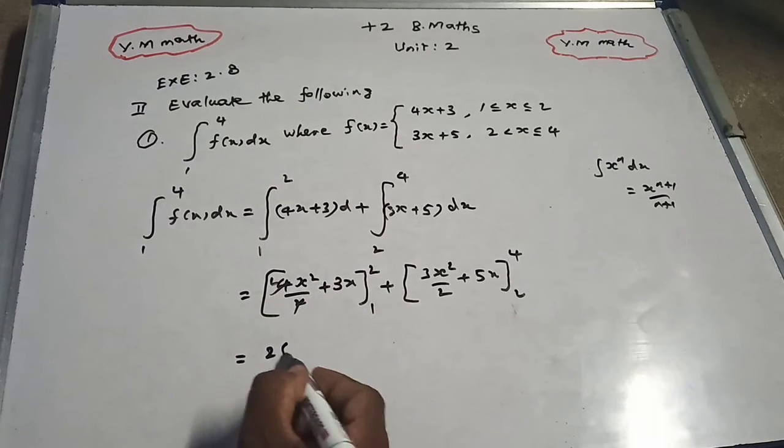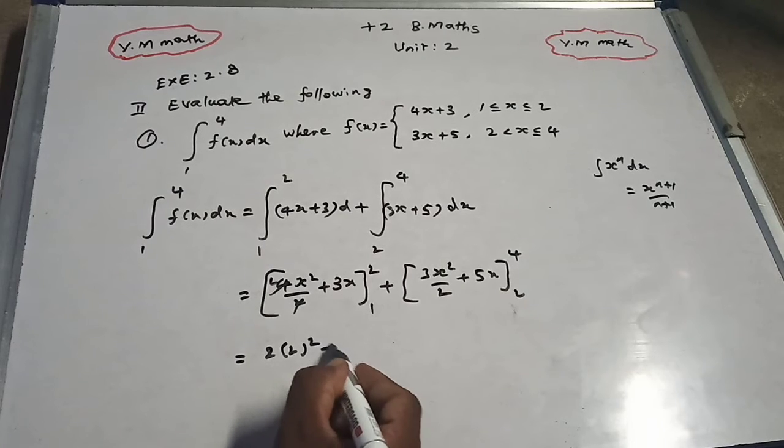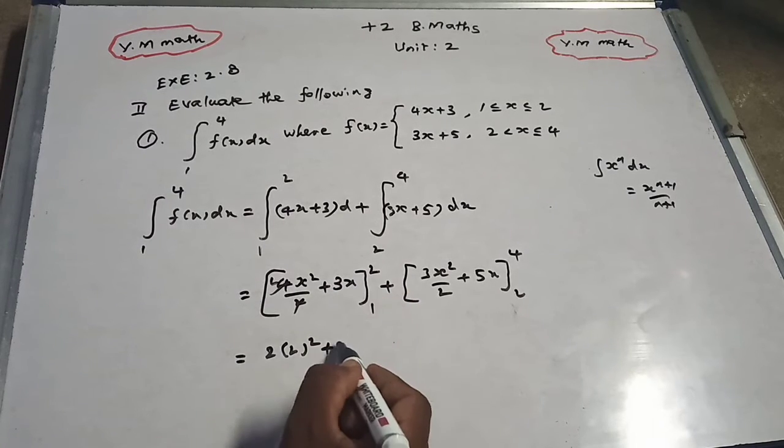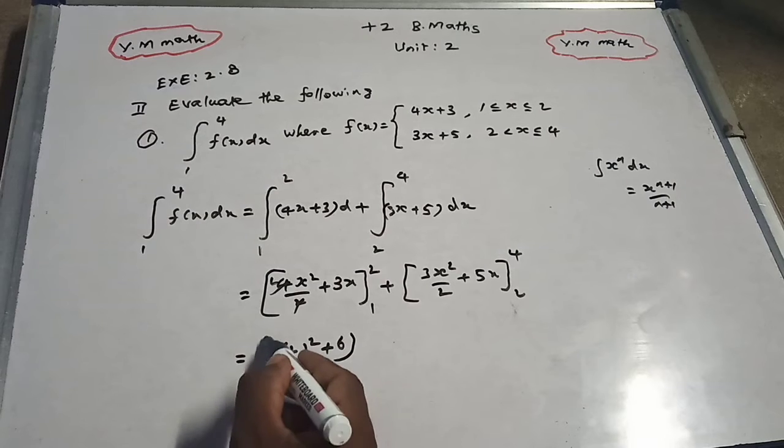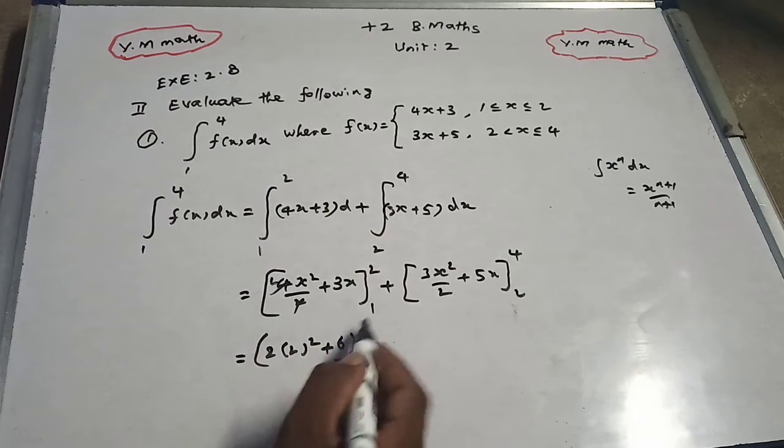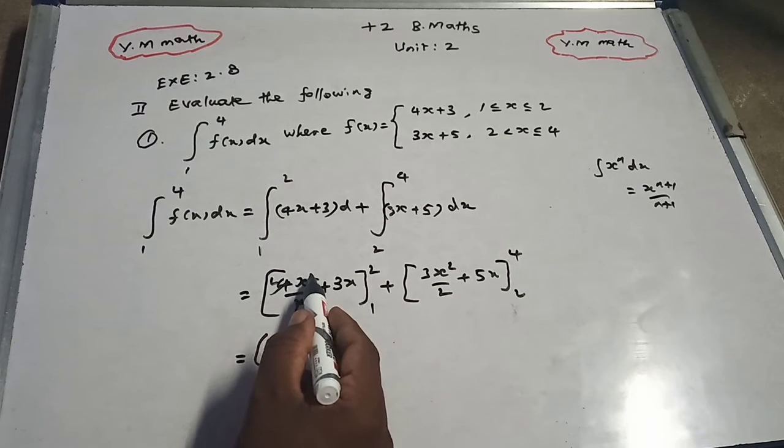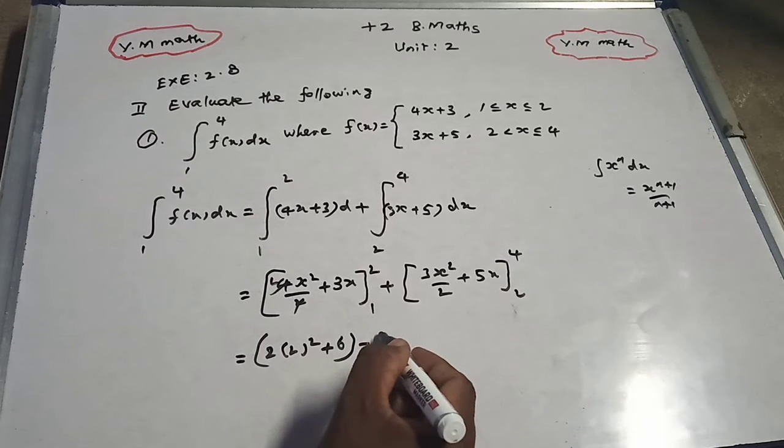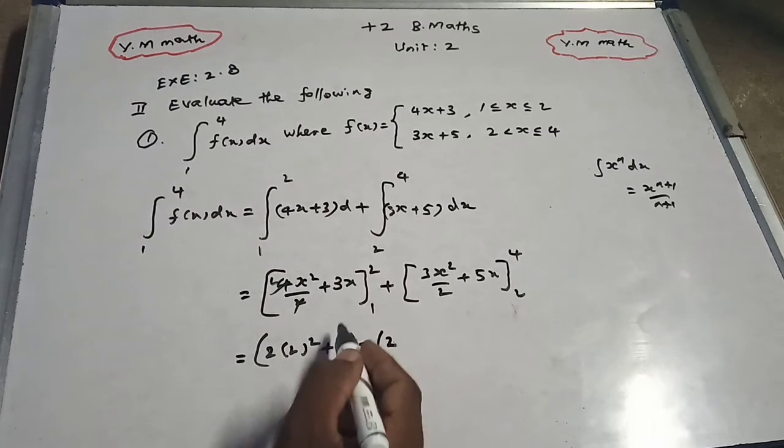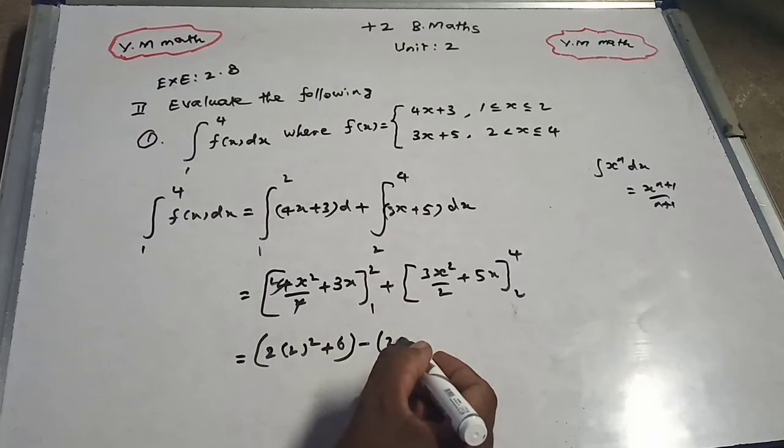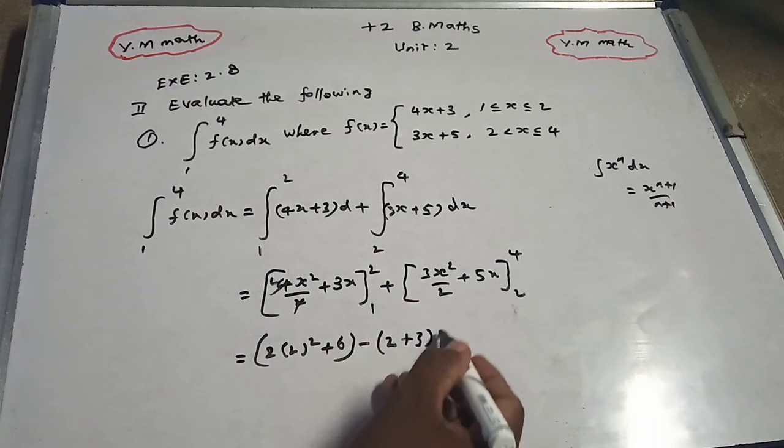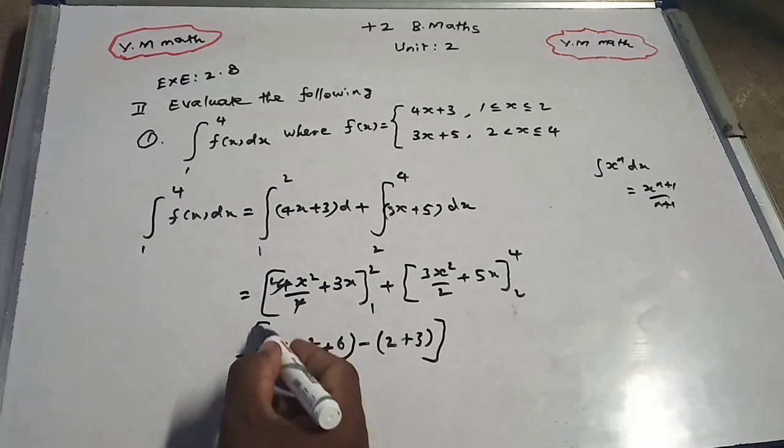2 times 2 squared plus 3 times 2 is 6, this is the upper limit. Minus the lower limit: 1 squared is 1, so this minus 2. So this is the first integration limits.